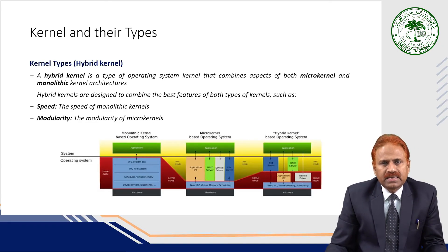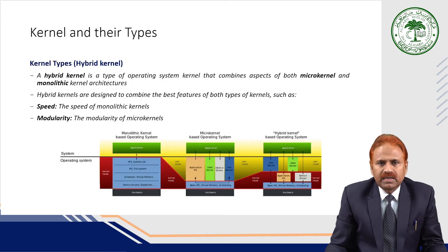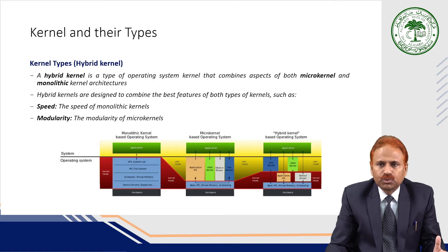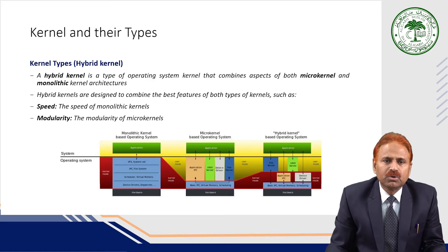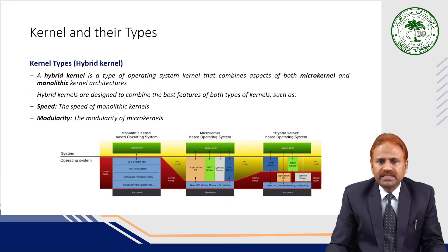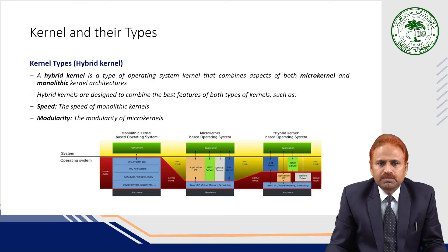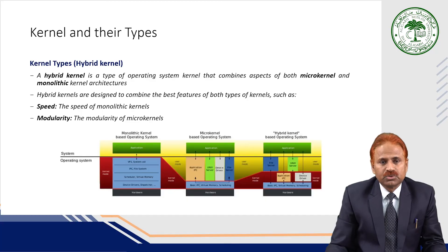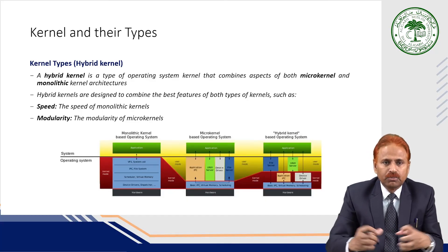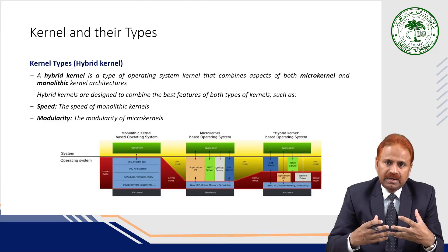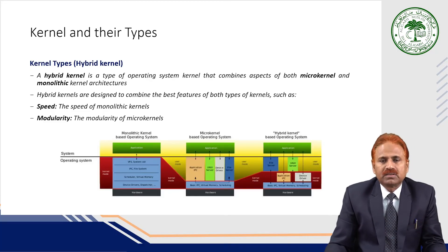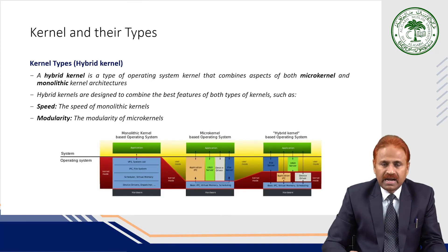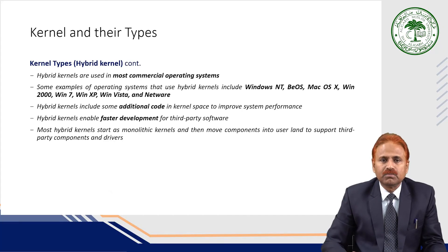Another type of kernel is known as the hybrid kernel. As the name suggests, a hybrid kernel combines aspects of both microkernel and monolithic kernel architecture. Hybrid kernels are designed to combine the best features of both types, such as the speed of monolithic kernels and the modularity of microkernels. The best features of both microkernel and monolithic kernels are used in hybrid kernels to make the system more efficient.